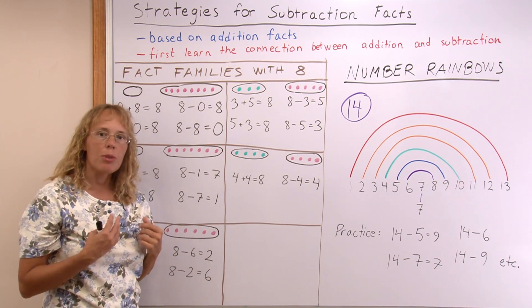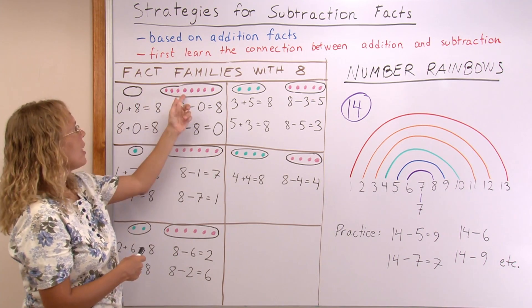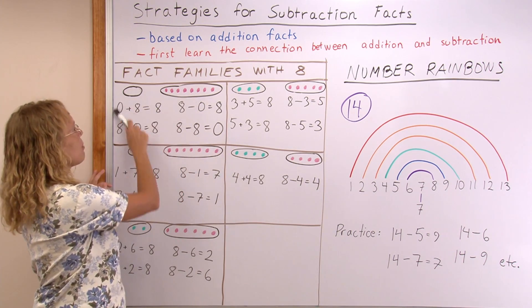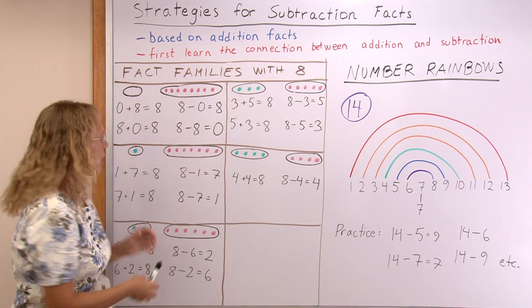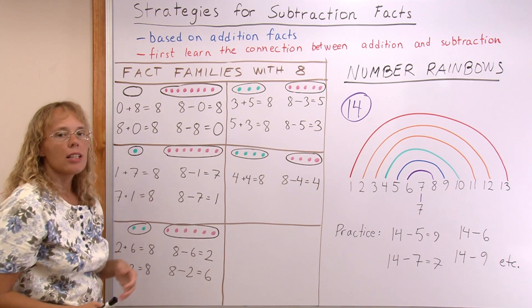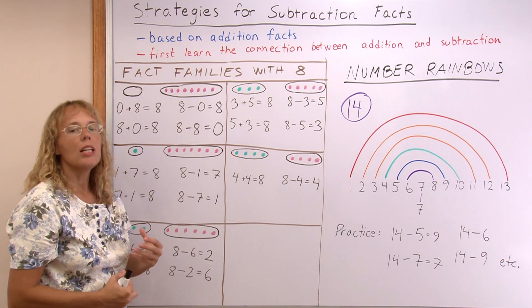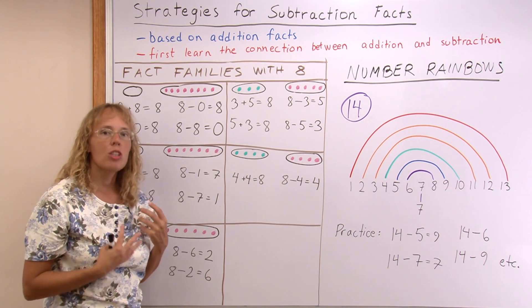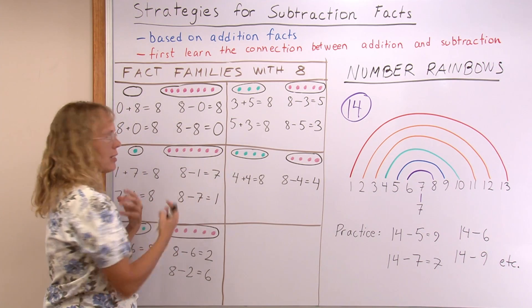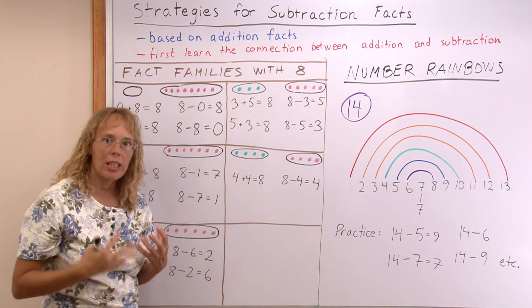But actually there's 3 numbers connected with each fact family. Because there's 0 and 8 and the total 8. As you can see, each fact in the fact family uses the 3 numbers. Here's 1, 7 and 8, or 8, 1, 7. In each subtraction or addition, the same 3 numbers are used. And so then the child will learn to remember those 3 numbers, like 7, 1, 8. They belong together in this fact family. Or 5, 3, 8—they belong together.